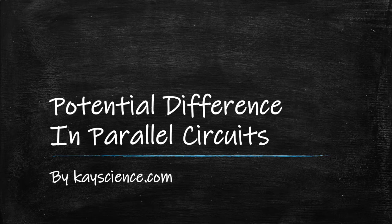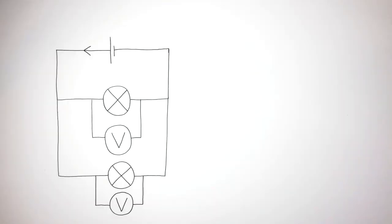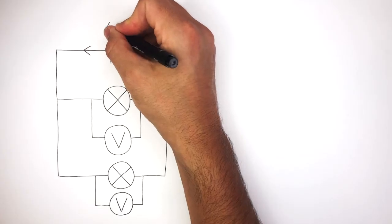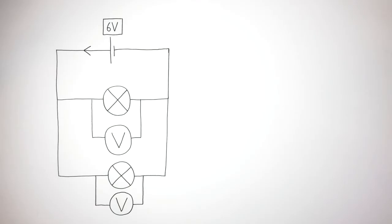Potential difference in parallel circuits by kscience.com. Here is a parallel circuit consisting of a cell, two filament lamps and two voltmeters connected in parallel across those filament lamps.